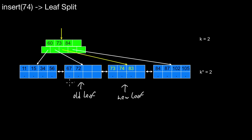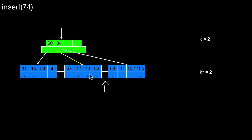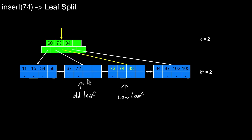We split the two leaves into two ranges: the new leaf now covers data from 73 to 83, and the old leaf from 67 to 72. We also send the pivot to the parent node. It's not enough to just split the leaves — you also have to insert a new entry into the parent node. The pivot must be 73 in this case; if it were 72, we wouldn't find this entry anymore, because the condition requires going right if equal to 73 or greater.